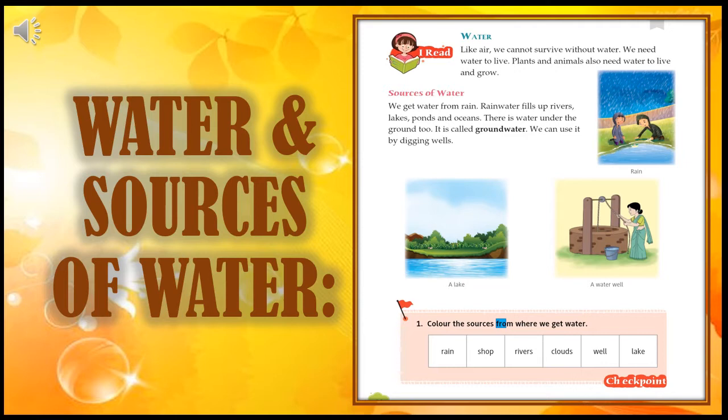Now, what do you see in the first picture? See the second picture. What is the woman doing in the third picture? And where is the water coming from in all three pictures? You can see in the first picture there are two children — they are playing with a boat. In the second picture there is a lake. In the third picture, the woman is taking out water from the well. In all three pictures, the water is coming from rain. So the main source of water on the earth is rain.